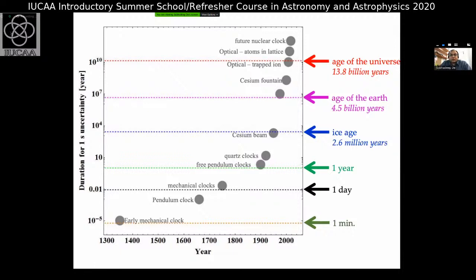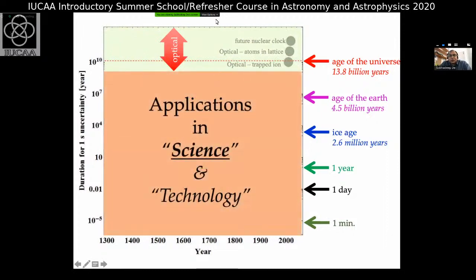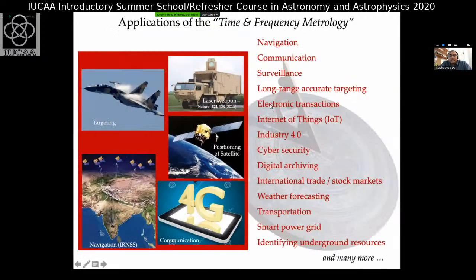This is the last slide from yesterday's talk. The y-axis is one second inaccuracy over some duration when a clock operates. The most accurate clocks are presently accurate to one second over about 30 billion years. Today I'll focus on the scientific applications, but first one slide on technological applications.